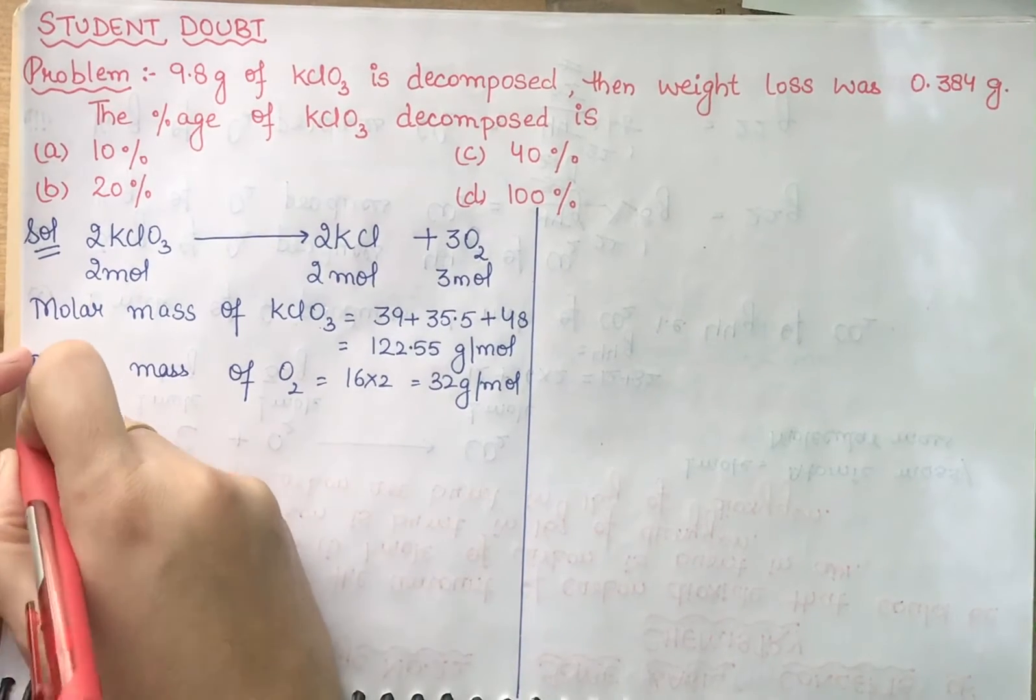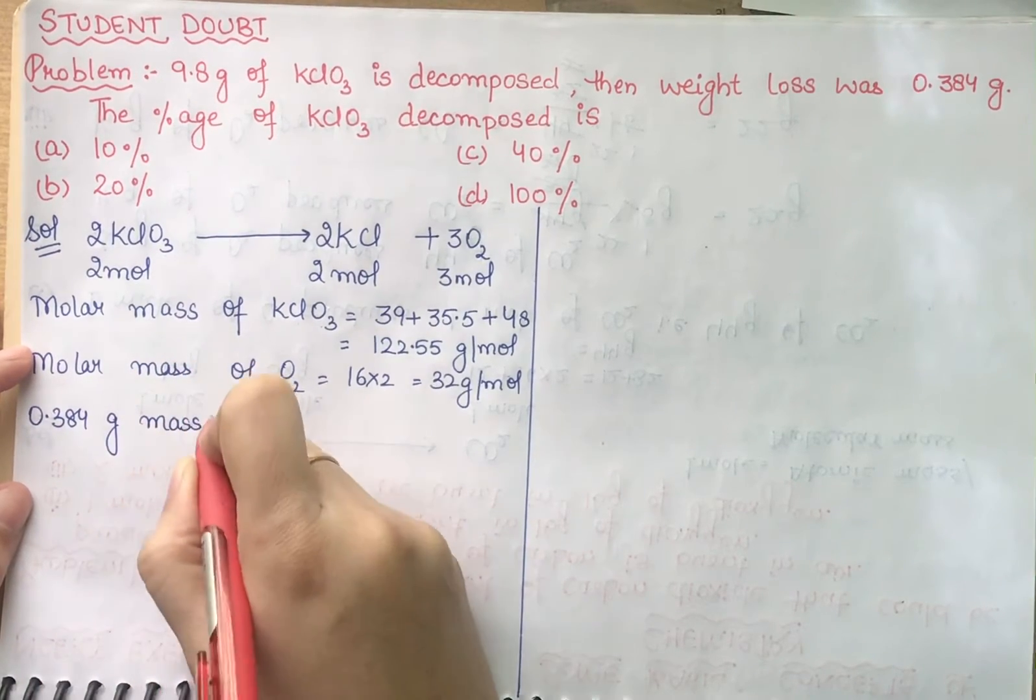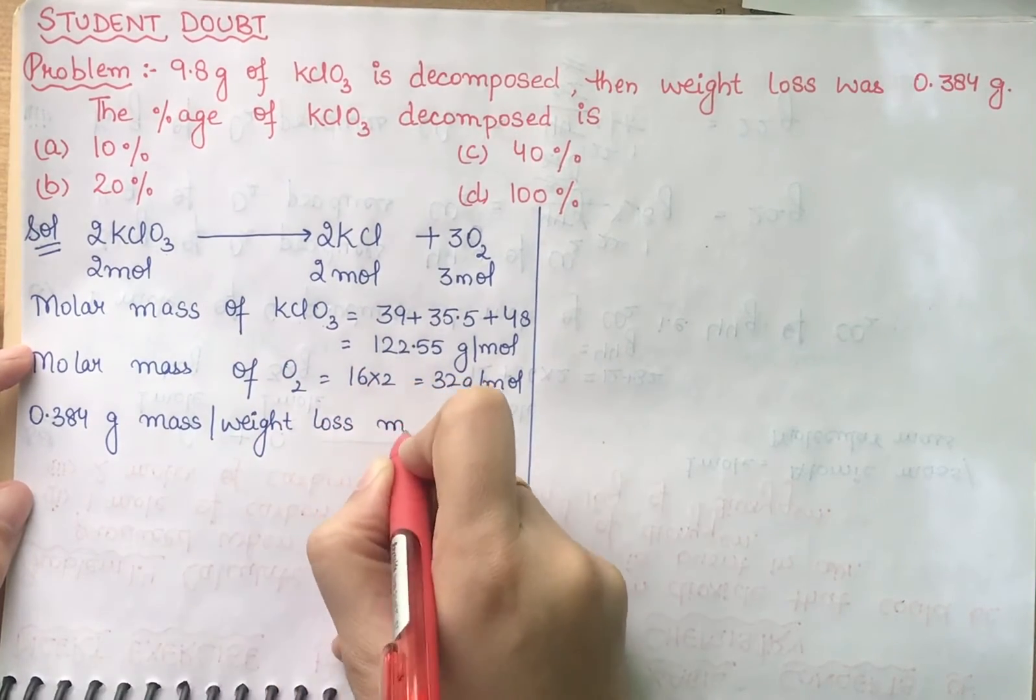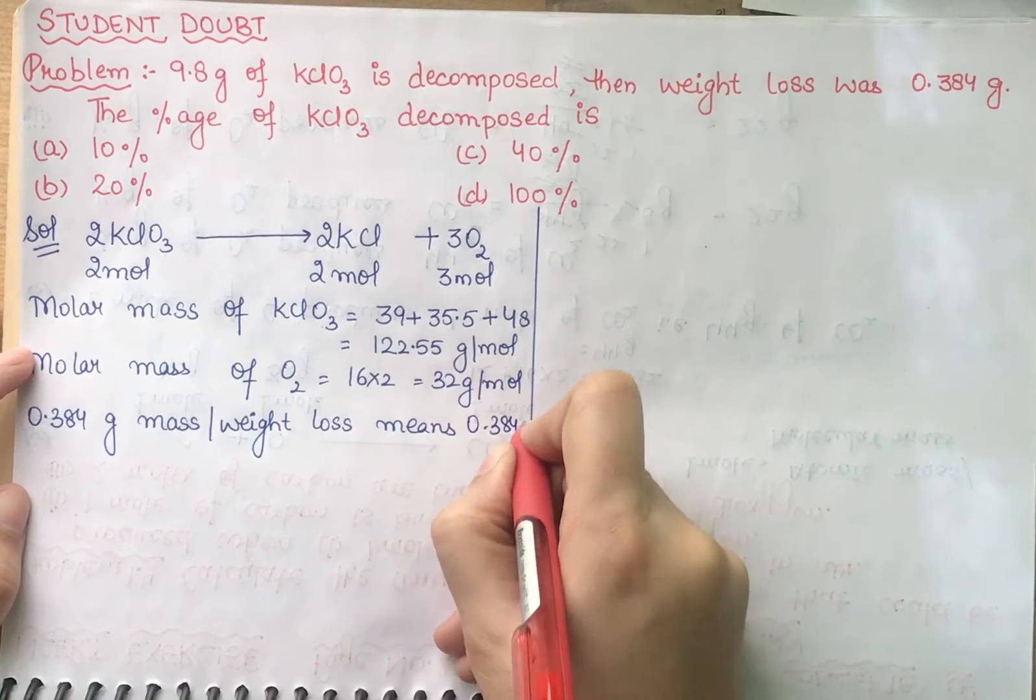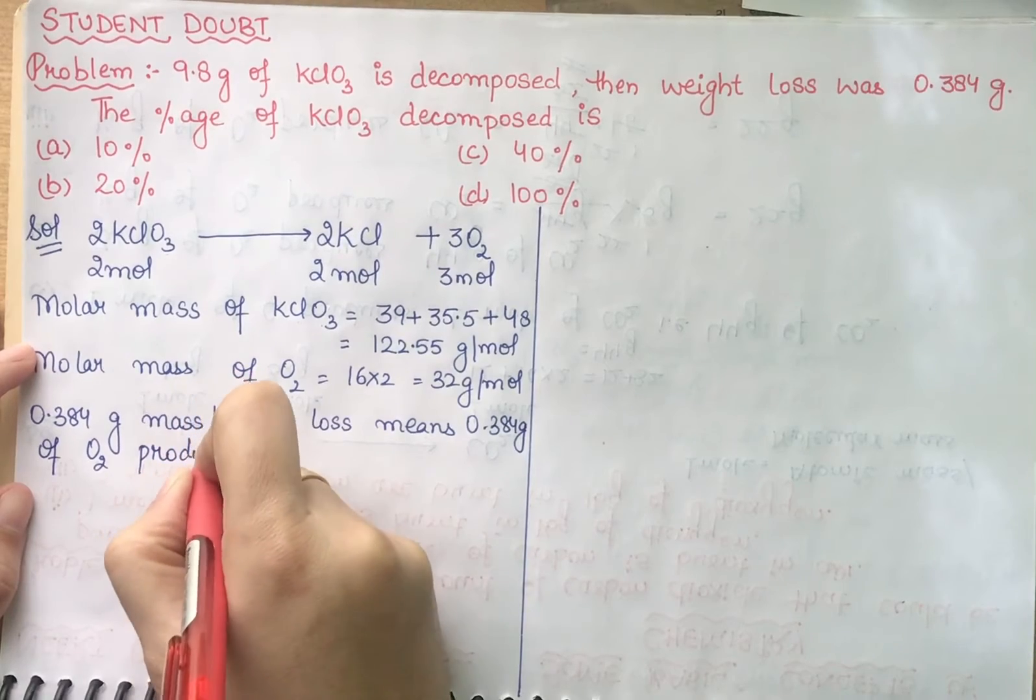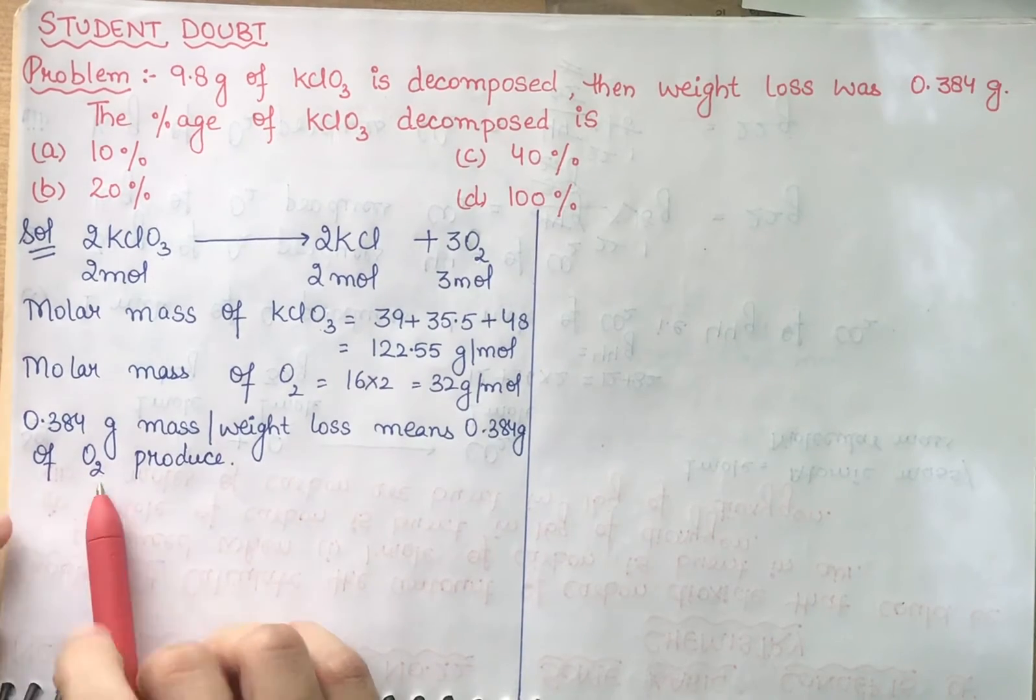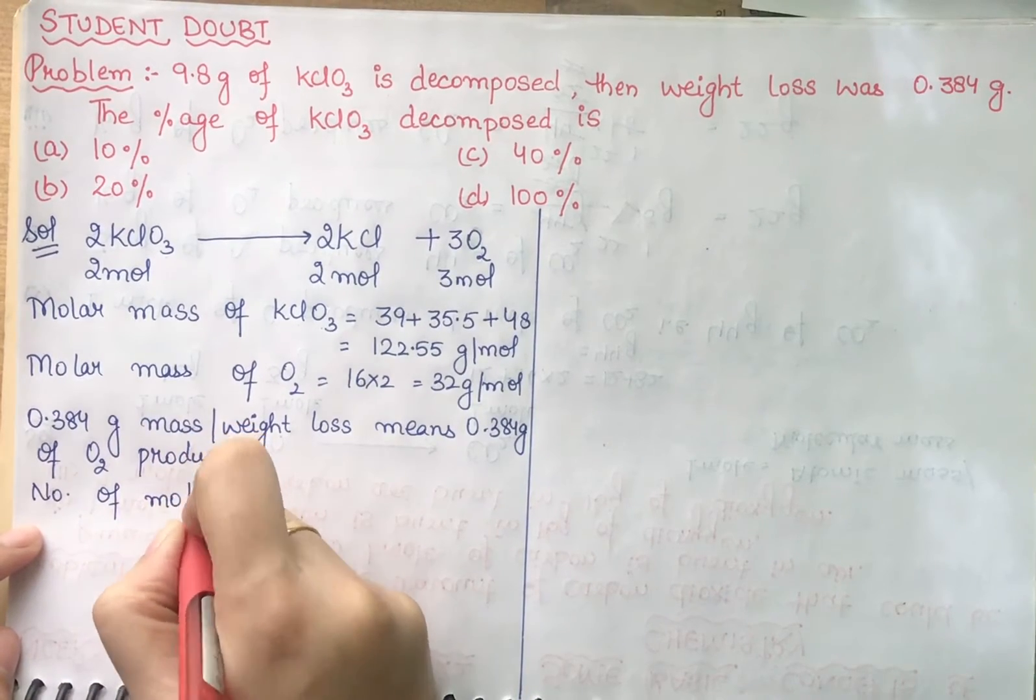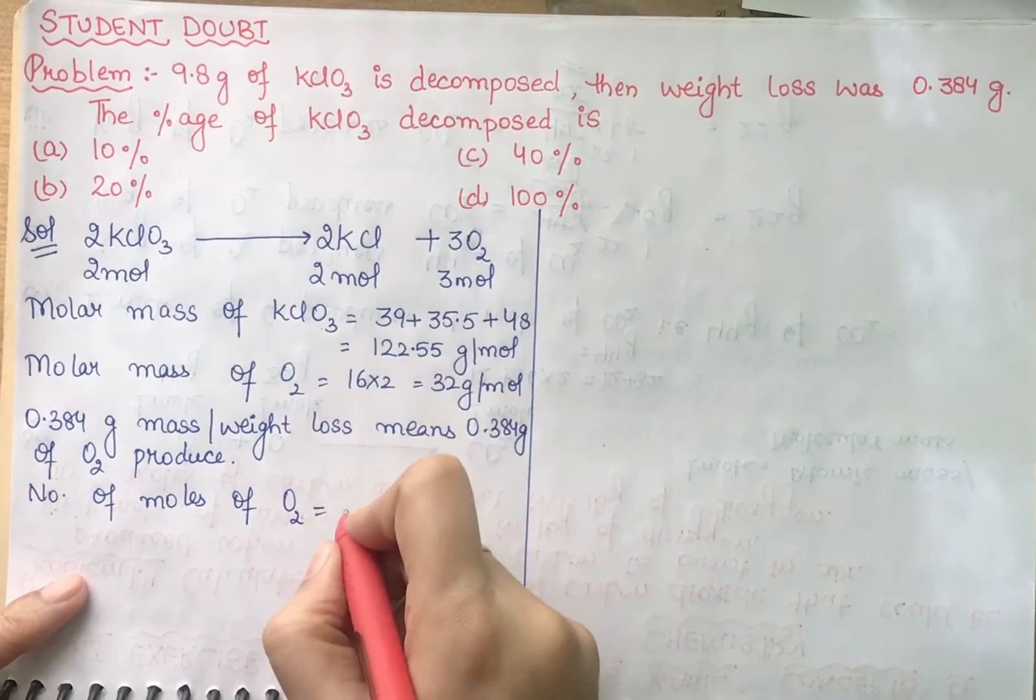Now I'm saying that 0.384 gram mass loss, or you can say weight loss, means 0.384 gram of O2 produced. So what does it mean? Weight loss means that amount of oxygen is produced. Now look at the number of moles of O2 with respect to this weight. So what does it mean? Actual weight.